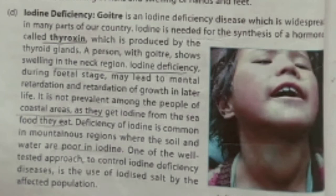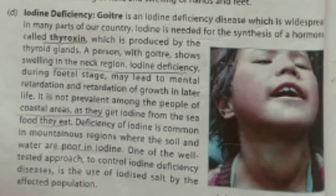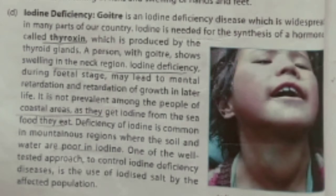Goiter is an iodine deficiency disease which is widespread in many parts of our country. You may have seen persons with swelling in their neck region — that is due to deficiency of iodine. They are not taking iodized salt in their diet. Mainly these diseases occur in persons living in coastal areas, because they do not use iodized salt. This disease is known as goiter.